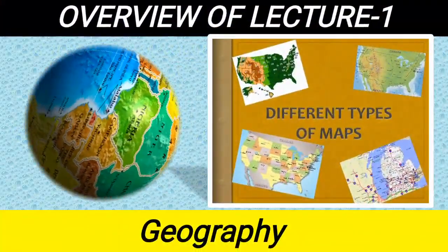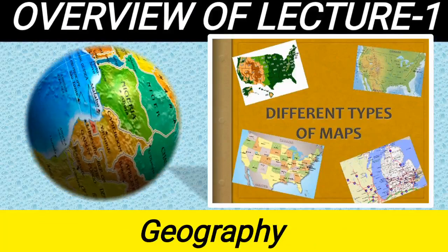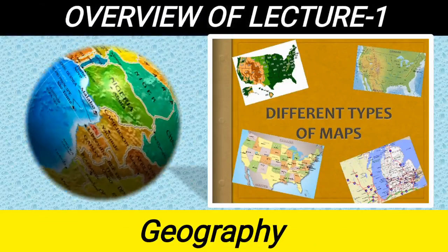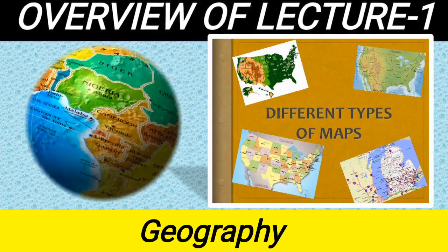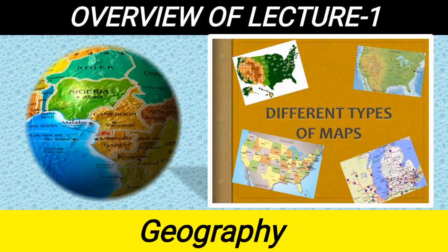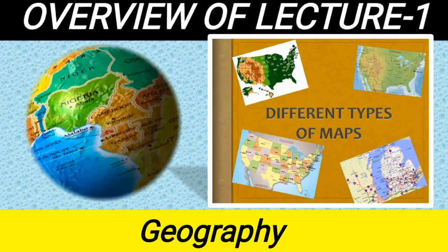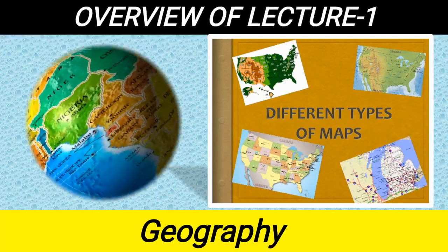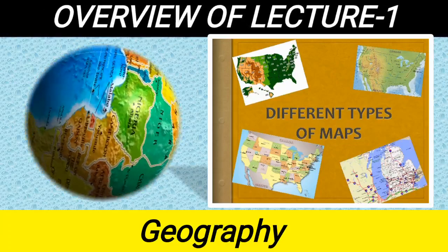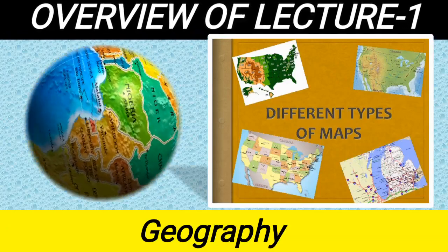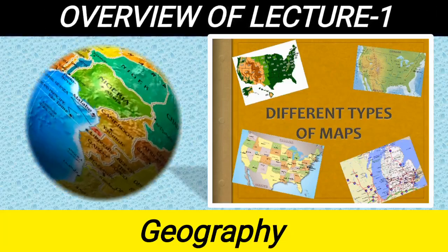Grade 5, before we talk about lecture number 1, let's discuss the overview of your first lecture. As this slide shows, in today's lecture we will discuss about the different types of maps. This topic belongs to your first lesson, which is geography. You can see the globe rotating on the screen and on the right side you can see different maps. We will discuss about the types of maps, the importance of maps, and where we can use different maps. This is going to be a very interesting lecture.